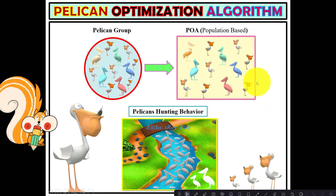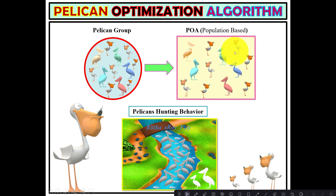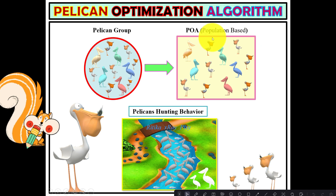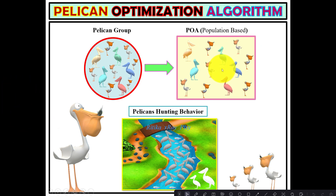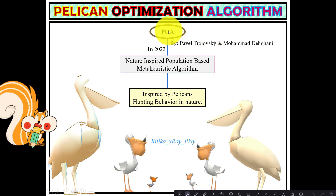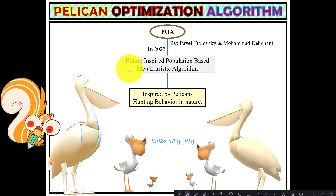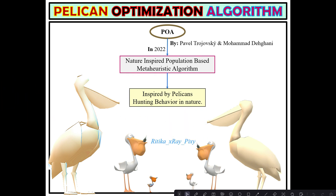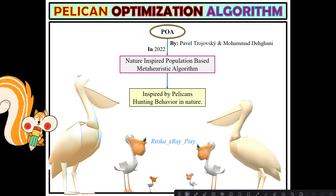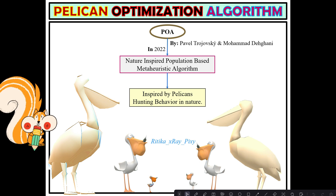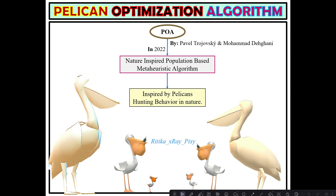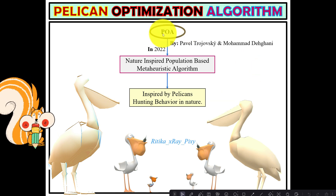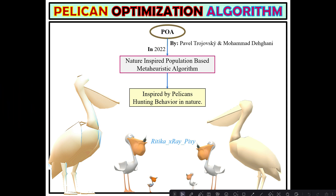In the virtual environment, the search space contains virtual pelicans. Using different mathematical models, exploration and exploitation are performed using a group of virtual pelicans to find the optimal solution for engineering design problems. The Pelican Optimization Algorithm was introduced in 2022 as a nature-inspired, population-based metaheuristic optimization algorithm. Its performance was tested on 23 different unimodal and multimodal test functions and 4 engineering design problems, outperforming 8 well-known metaheuristic algorithms.